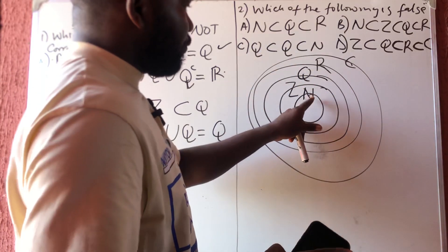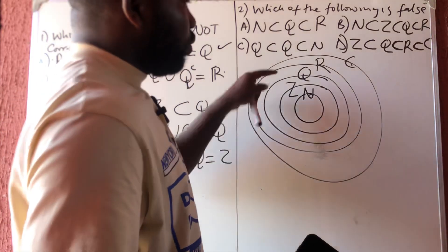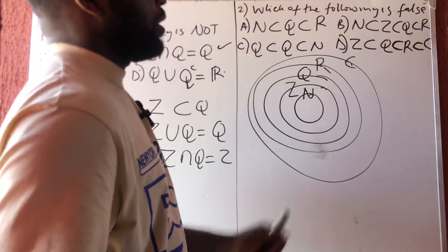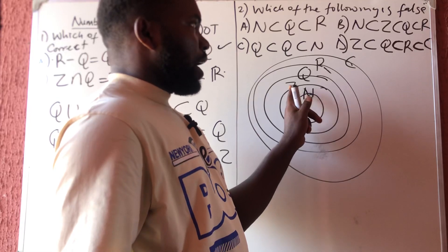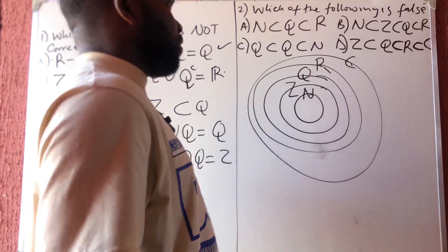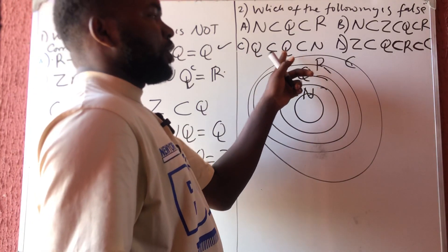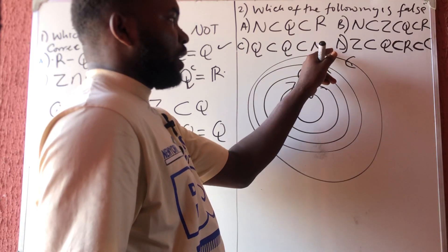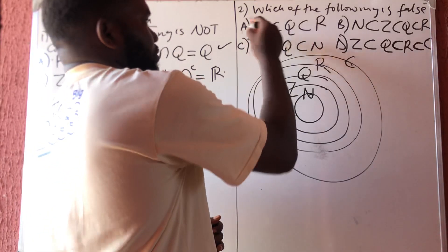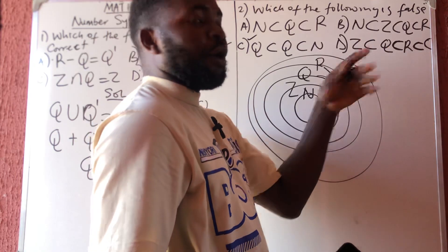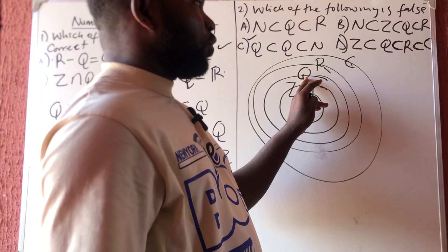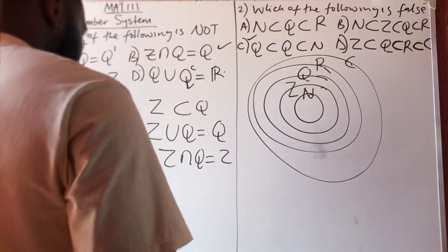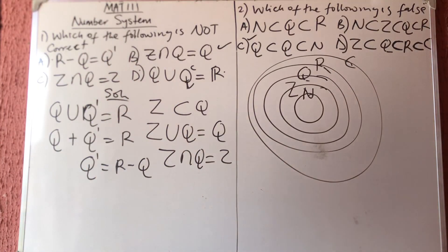Option A is correct because N is found inside Q, and Q is found inside R. Option B is correct because N is inside Z, Z is inside Q, and Q is inside R. Option C says Q is a subset of N — but Q cannot be found inside N, so that is false. Option D is correct: Z is inside Q, Q is inside R, and R is inside C. So the answer is option C.